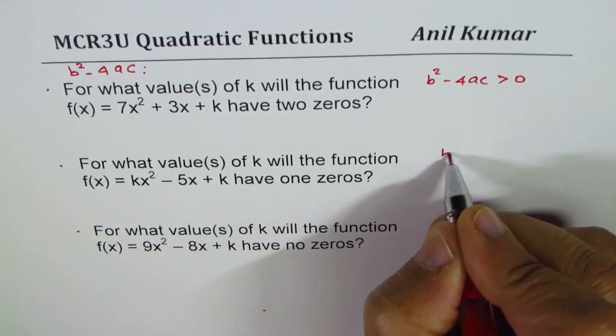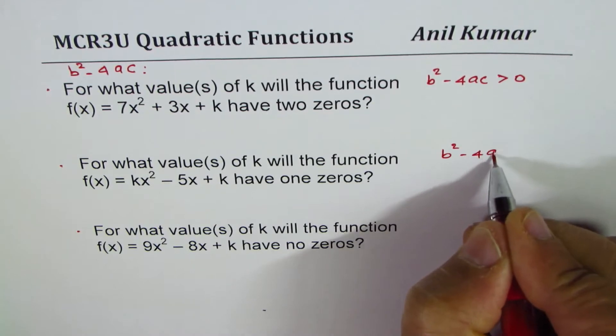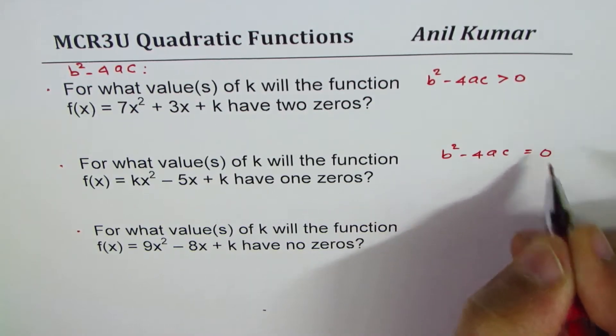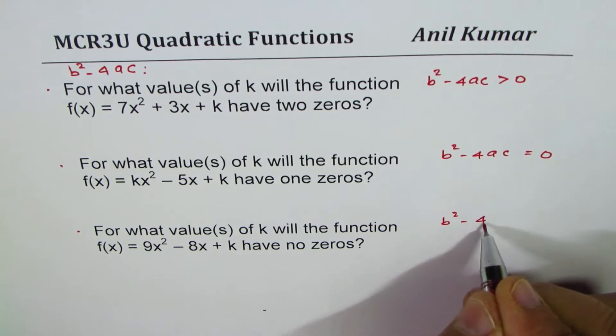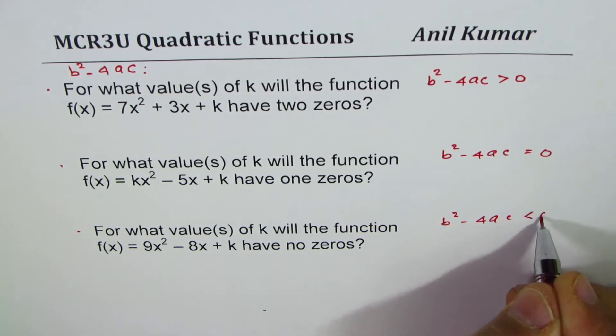For one zero, b² - 4ac should be equal to zero. And for no zeros, b² - 4ac should be less than zero.